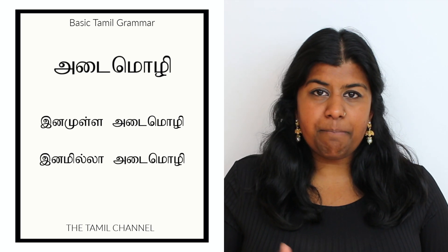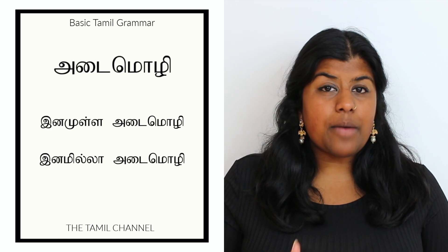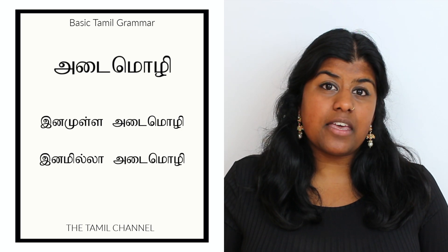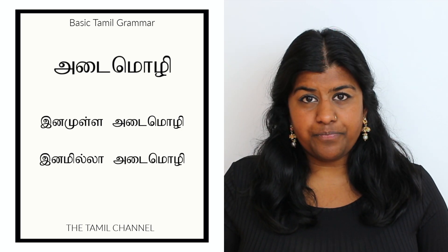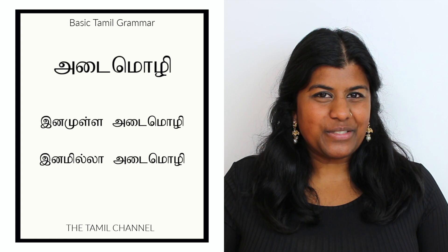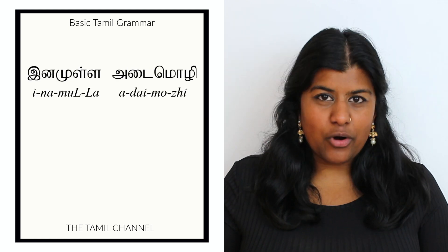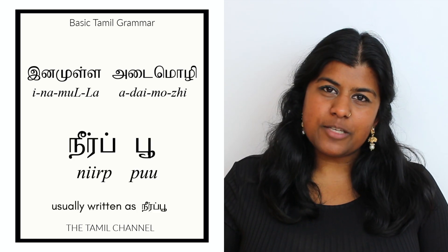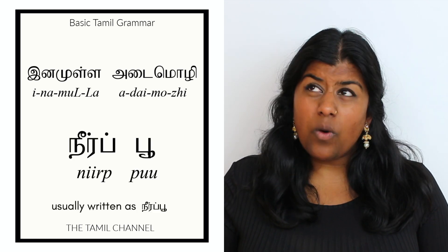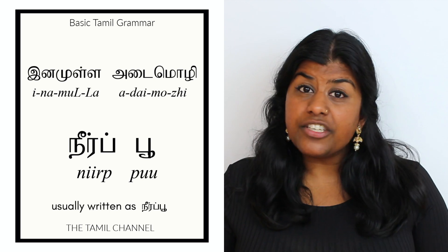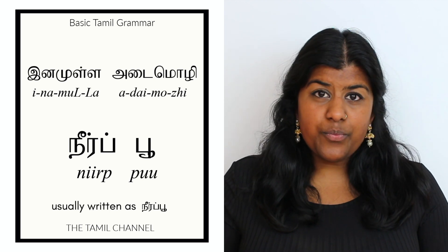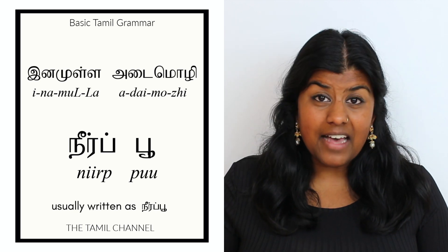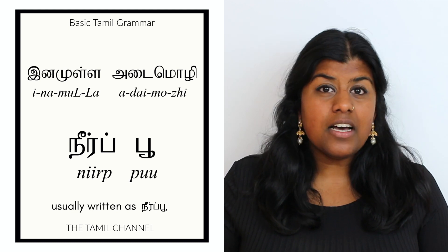So the adjectives are categorized depending on whether they are describing a characteristic of a noun or whether they are describing the type of the noun. Let me explain it better using examples. So for Inamulla adai molly, I'm going to use the example of flowers. You can describe flowers based on where they grow, what type they are, if they're poisonous or not, etc. So because these are different categories, if you're using words to describe that, it becomes an Inamulla adai molly.